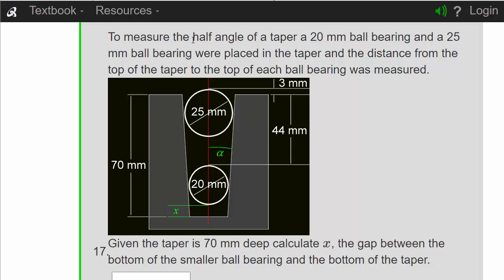To measure the half angle of a taper, a 20 millimeter ball bearing and a 25 millimeter ball bearing were placed in the taper, and the distance from the top of the taper to the top of each ball bearing was measured.